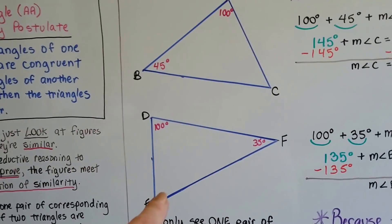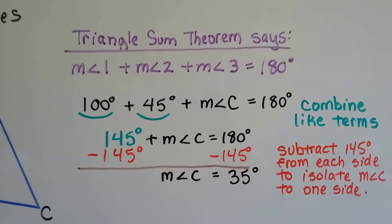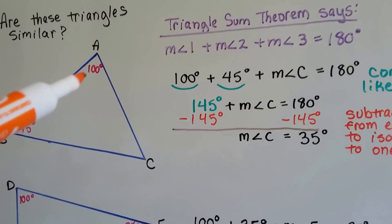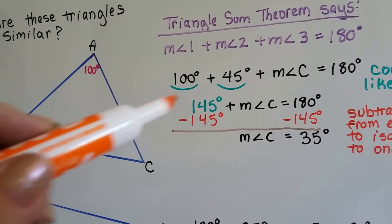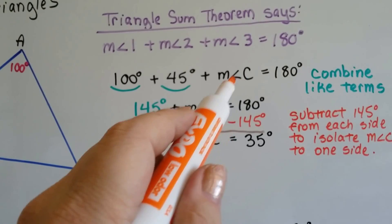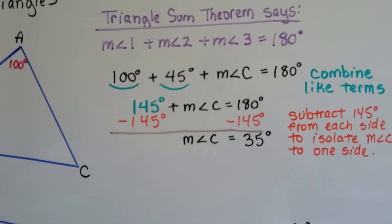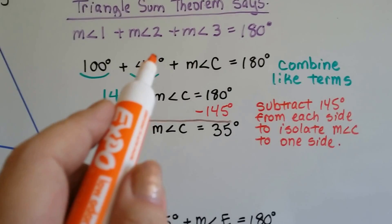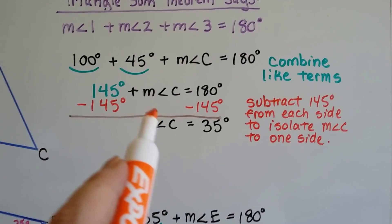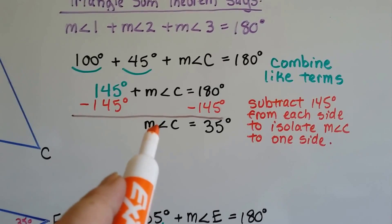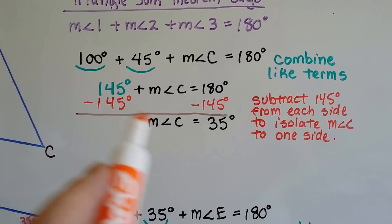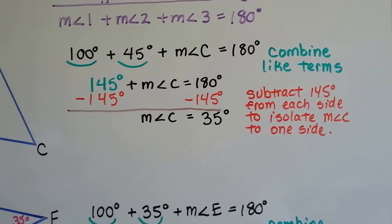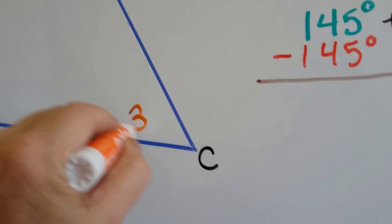So we need to find out the measure of angle C and the measure of angle E. The triangle sum theorem says the measure of angle 1 plus the measure of angle 2 plus the measure of angle 3 equals 180 degrees. So we substitute 100 degrees for measure of angle 1 and 45 degrees for the measure of angle 2, and measure of angle C for angle 3. We combine the like terms, 100 degrees plus 45 degrees, and get 145 degrees. To isolate the measure of angle C, we subtract 145 degrees from each side. 180 minus 145 is 35 degrees. So the measure of angle C is 35 degrees.